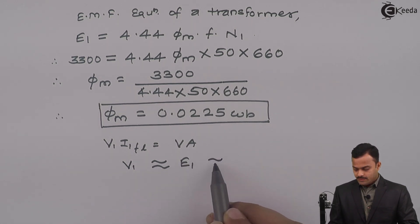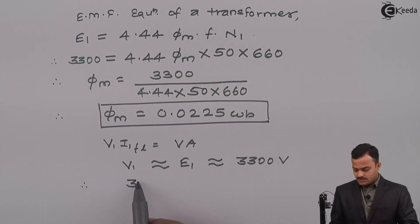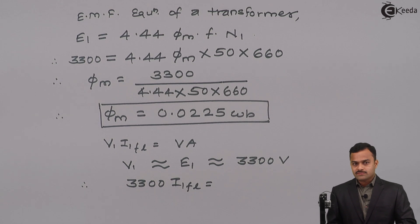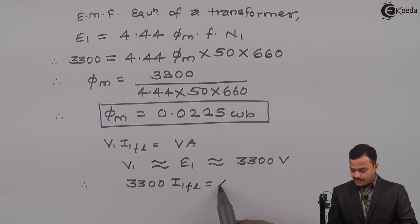Hence I can say V1 equal to 3300 volt. So 3300 volt multiplied by I1 FL is VA rating of a transformer and that is 40 kVA meaning 40,000 VA.